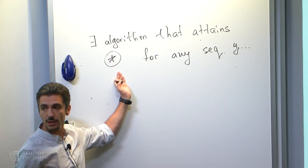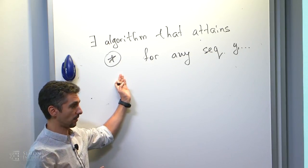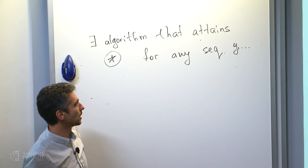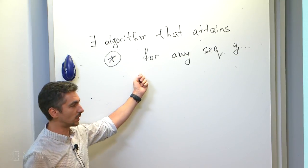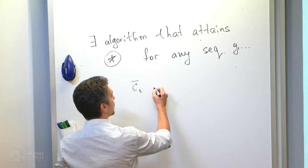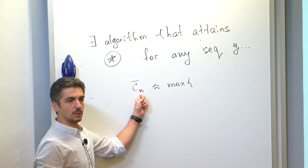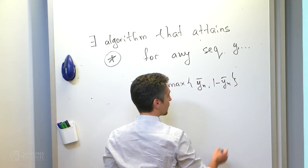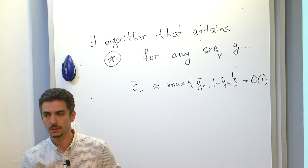This is a non-trivial statement. I invite you to spend maybe 15 seconds thinking about how to get such a result — how one would attain a proportion of correct predictions approximately max(ȳ_n, 1−ȳ_n) plus something small for a finite horizon n. Can you come up with a method that attains this, with a term going down with n? Anyone have a suggestion?